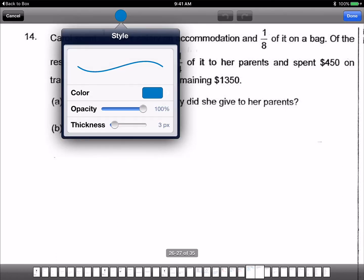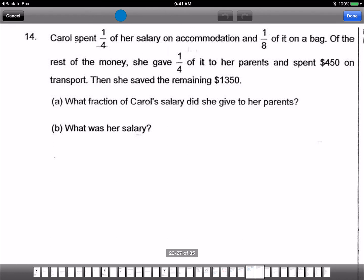Okay, so Carol spent one quarter of her salary on accommodation. So we have Carol, one quarter accommodation, one eighth on a bag, and...